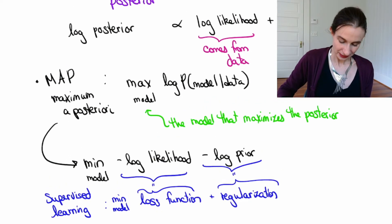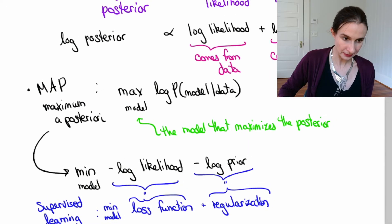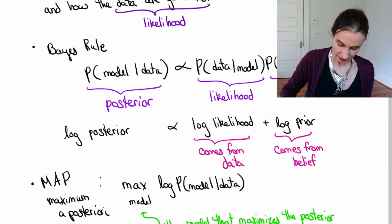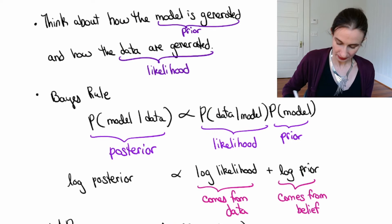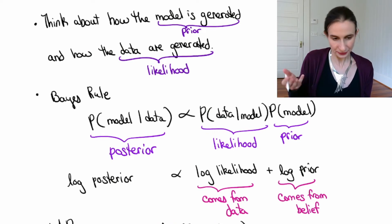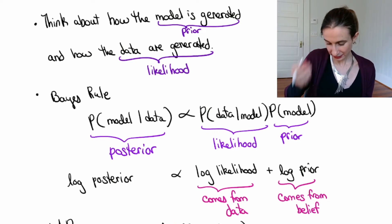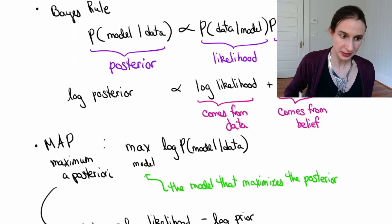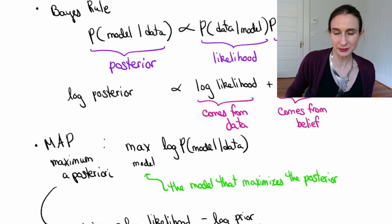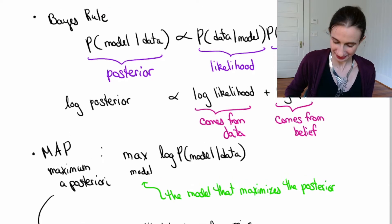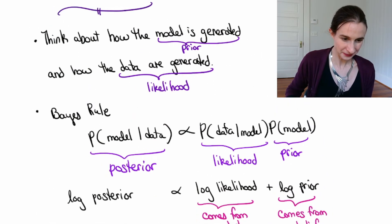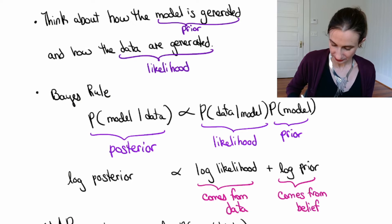Now a lot of you have heard of maximum likelihood. So maximum likelihood is where you don't have a prior, or if your prior is uniform, then that log prior term just goes away. But maximum likelihood is a special case where you maximize the likelihood and you don't worry about the prior. So right here where we have two terms, if you have no prior belief, or if your prior belief is uniform, you can ignore the prior term and just look at the likelihood.